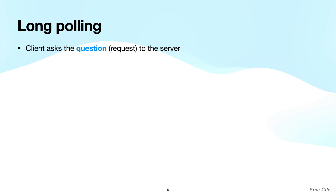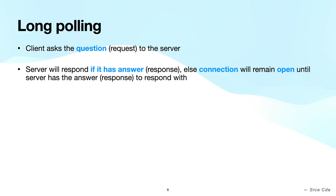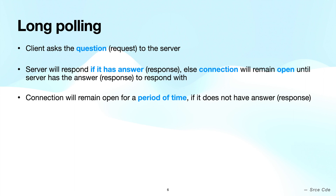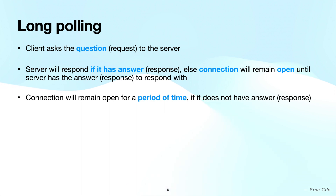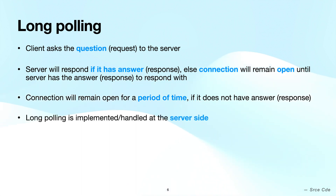Now moving on to long polling. Long polling is a technique to retrieve data from the server by maintaining a persistent connection between the client and the server. The client sends a request for new data; if new data is available, the server sends the response and the connection is closed, after which the client makes a new request. If the server does not have new data, it holds the connection open until new data is available or the connection times out. The connection timeout needs to be configured on the server side.